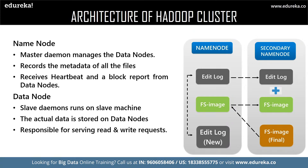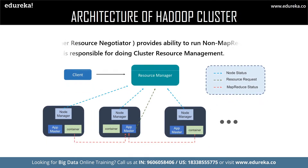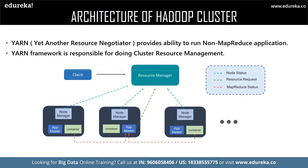The secondary name node is not actually a backup of the name node. Instead, it acts as a buffer which saves the latest updates to the FS image obtained in intermediate processes and finally updates them to the final FS image. Now let us discuss YARN — Yet Another Resource Negotiator. YARN consists of the following elements: node manager, app master, and container.